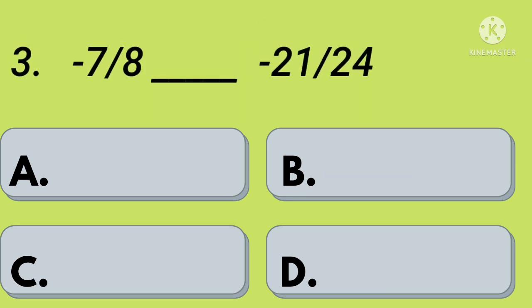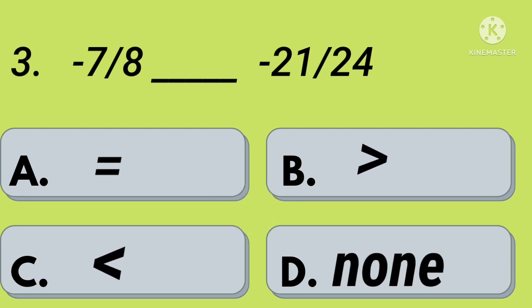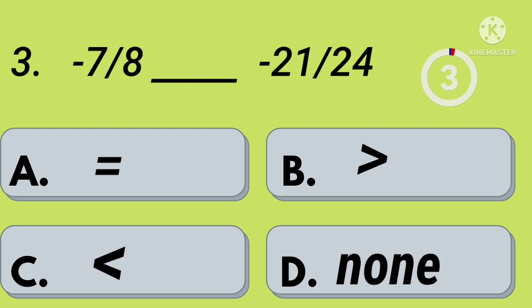Third question: minus 7 by 8 dash minus 21 by 24. Option A: equal, option B: greater than, option C: less than, option D: none. Your time starts now. Right, option A: equal.